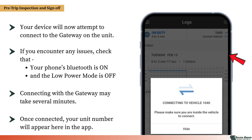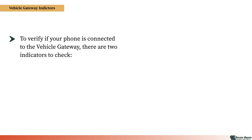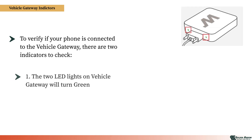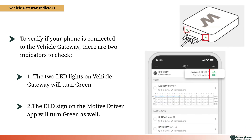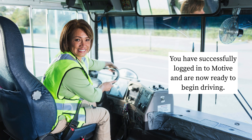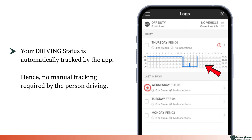Once connected, your unit number will appear on the app. To verify if your phone is connected to the vehicle gateway, there are two indicators to check. First, the two LED lights on the vehicle gateway will turn green. Second, the ELD icon on the Motive Driver app will also turn green. You have successfully logged into Motive and are now ready to begin driving. Your driving status is automatically tracked by the app, so no manual tracking is required.